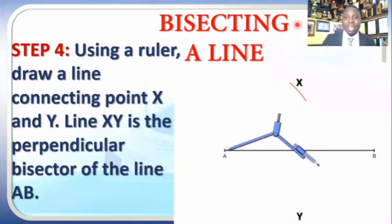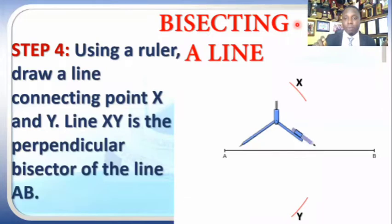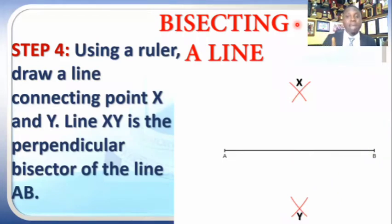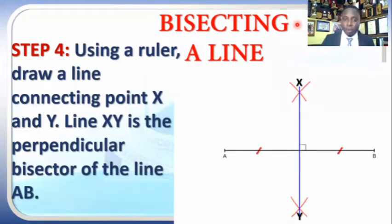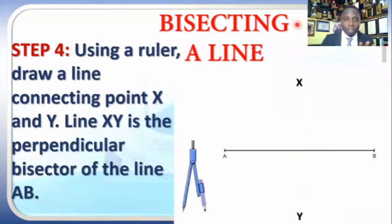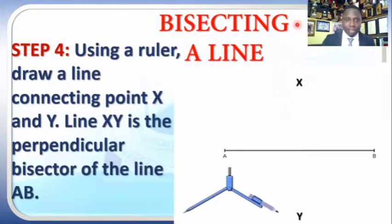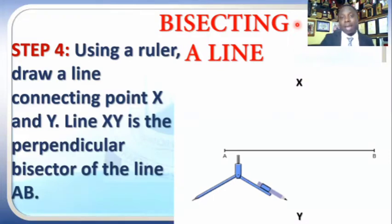Remember, construction lines are faint and thin, while outlines are bold and dark. The arcs we drew were construction lines. Now this line XY is my outline — my real line. I go ahead using the ruler to draw it. This line XY is a perpendicular bisector of the line AB, so I have simply bisected my line AB. This is how to bisect a line segment.